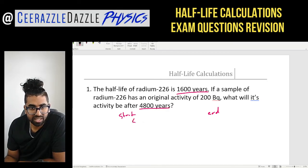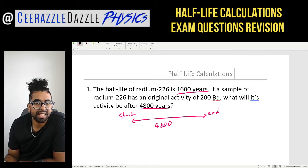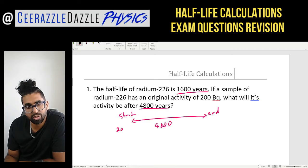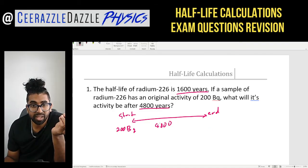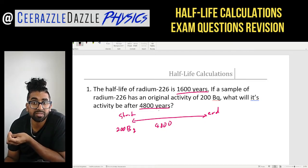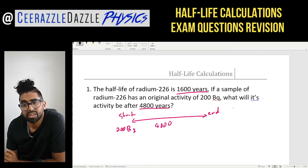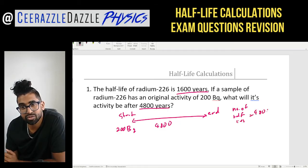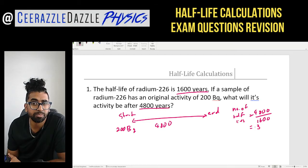We know that 4,800 years have passed. Initially we had 200 Bq at the start, and after 4,800 years we need to find how much is left. The key is to work out the number of half-lives within 4,800 years. Each half-life is 1,600 years, so the number of half-lives is 4,800 divided by 1,600, which equals 3 half-lives.